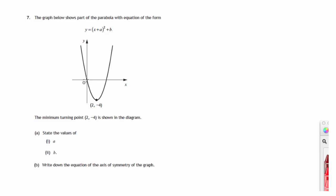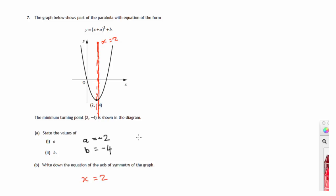Moving the graph 2 units to the right, parallel to the x-axis, a is equal to negative 2. And then moving all the heights down by 4 units, b is equal to negative 4. So there's the two values. Now the final part: write down the equation of the axis of symmetry of the graph. The axis of symmetry is a vertical line, parallel to the y-axis, passing through (2, negative 4). Every point on that line has an x-coordinate of 2. So the equation of the axis of symmetry is x equals 2.